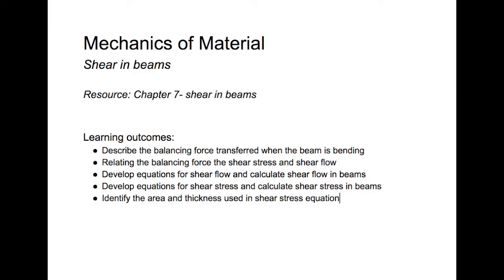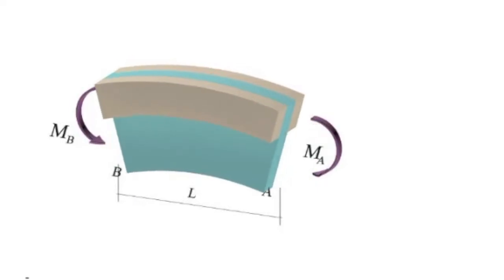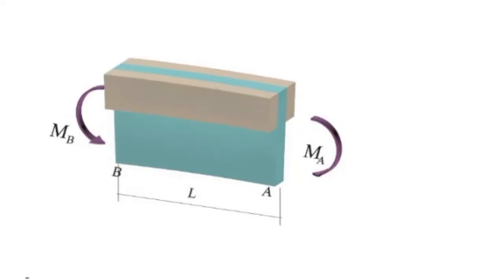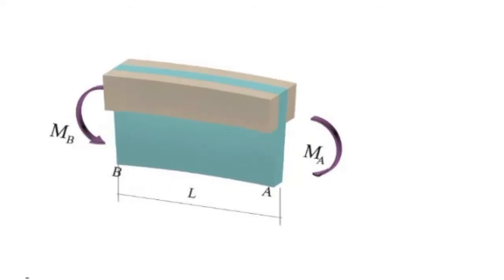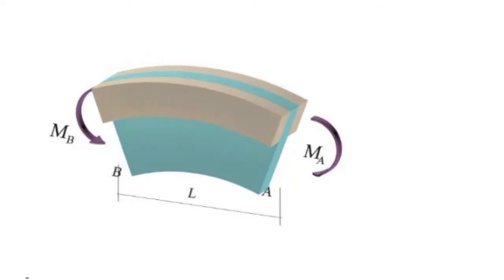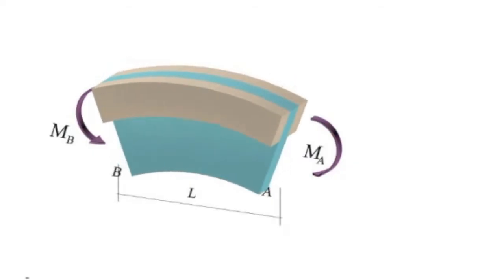Let's start with a sample beam that is subjected to bending. There is a beam that consists of three parts: one rectangle at the middle part shown in blue, and two other rectangles located on the sides. The beam is subjected to two moments on the right and on the left, and the moments are not equal to each other — the right one is larger than the left one. The length of the beam is L or delta x.